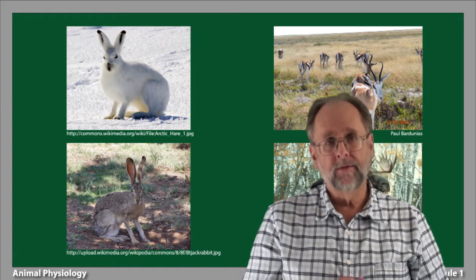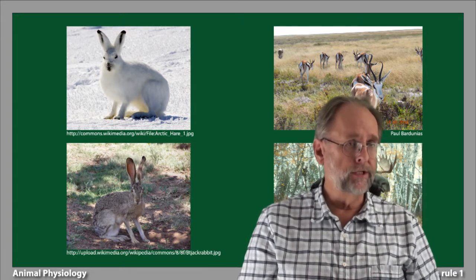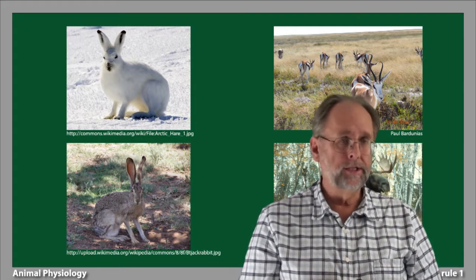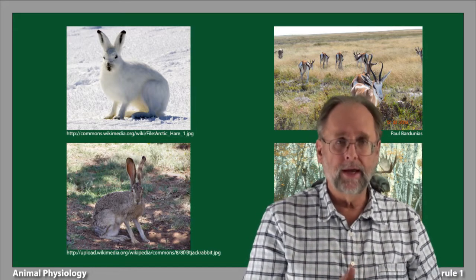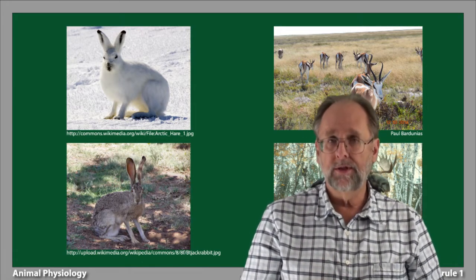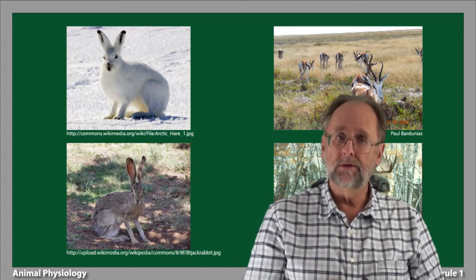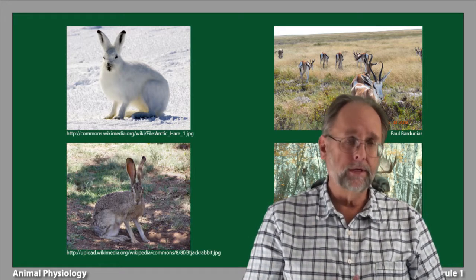Now it's important to emphasize that these biogeographic rules are statistical correlations. As in any statistical correlation, it's not hard to come up with counterexamples. The obvious counterexample, of course, is the elephant, which is the largest extant land animal and which is overwhelmingly tropical in its distribution.